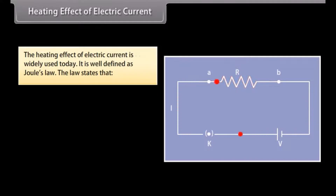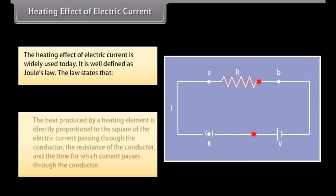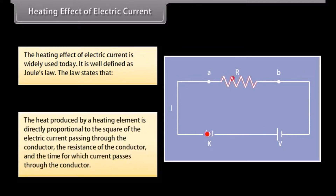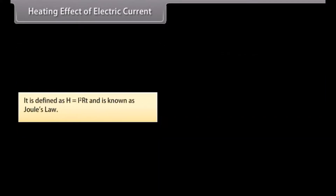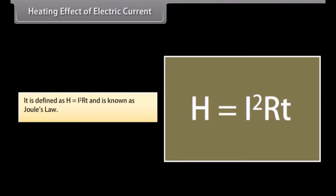The heating effect of electric current is widely used today. This effect is caused when electric current is passed through a conductor, generating heat due to the resistance it offers to the current flow. The work done in overcoming this resistance produces heat. The heat produced is directly proportional to the square of the electric current (I²), the resistance (R), and the time (T). This is expressed as H = I²RT and is known as Joule's Law.